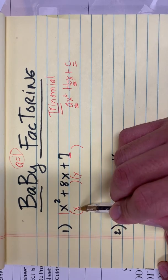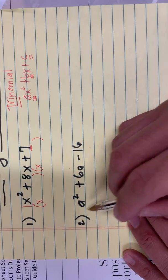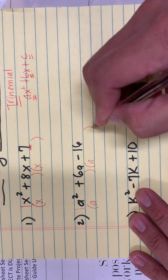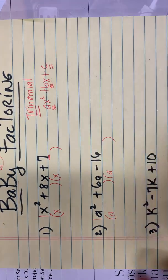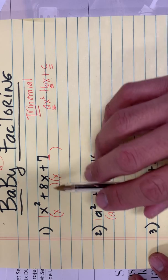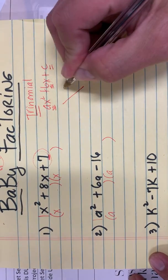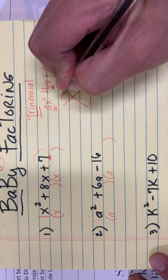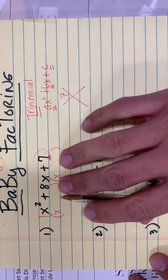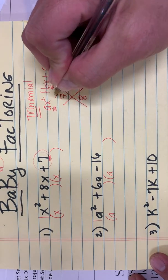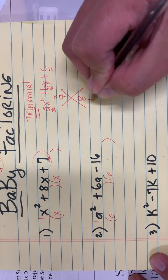If this is 1, you always just write X and X here. Like this is equal to 1, so you just write there A and A automatically. So you have to think of two numbers when you multiply them, give you the C. Let's put here 7, because that's your C, and the B is 8.